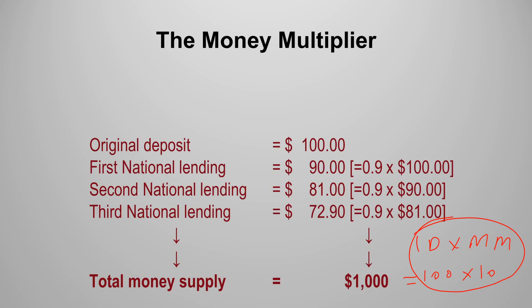This formula — initial deposit multiplied by the money multiplier — is the simple method to calculate total money supply when given a reserve ratio and initial deposit. You could also add up each round manually, but that process is long and approaches the same answer only at infinity. So that's Part 5: money is created through deposits being loaned out repeatedly. In the next part, we'll move on to monetary policy, which is directly linked to this topic. See you there!